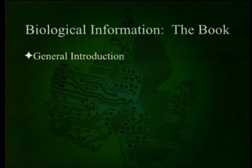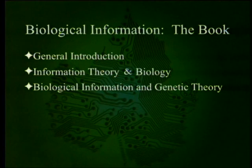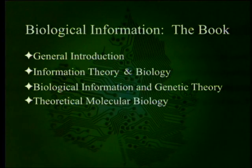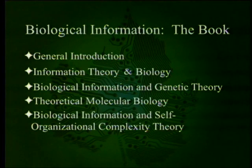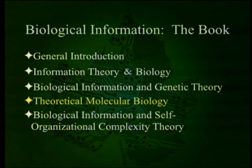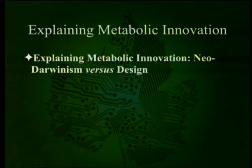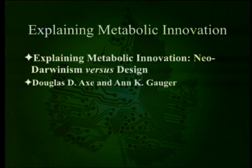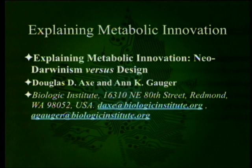We've been through most of this book: a general introduction to information theory and biology, biological information and genetic theory, theoretical molecular biology, and finally biological information and self-organization and complexity theory, which we'll cover next week. Right now we're at the tail end of theoretical molecular biology. The chapter we're going to be looking at is called 'Explaining Metabolic Innovation: Neo-Darwinism versus Design,' by Douglas Axe and Ann Gauger. They run the lab at the Discovery Institute, which is a biological institute in Redmond, Washington near Seattle.